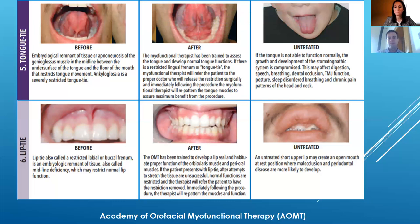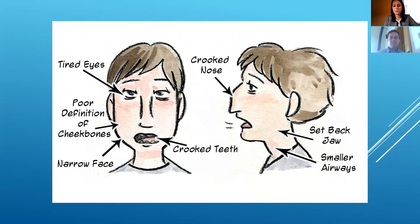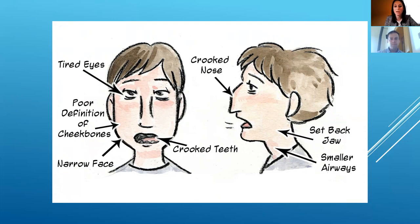Due to these restrictions, if you develop an open mouth posture because you can't keep your lips properly sealed, you see all these craniofacial changes. We see tired eyes, poor definition of the cheekbones, a narrow face — the long narrow face syndrome — crooked teeth, a setback jaw where the chin becomes protruded, smaller airways, and even a crooked nose. There are so many different changes that can happen over time, which is why addressing these restrictions as early as possible is critical.